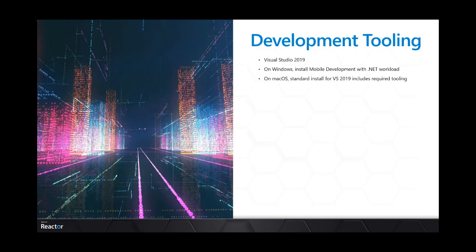For the development tooling we're going to use today — and really what you would use for mobile development with Xamarin — we're going to use Visual Studio 2019. On Windows, you need to install the mobile development with .NET workload, which I'll show you how to do in the demo. If you're on Mac OS running Visual Studio for Mac, the standard installation already includes all the required tooling for Xamarin development.